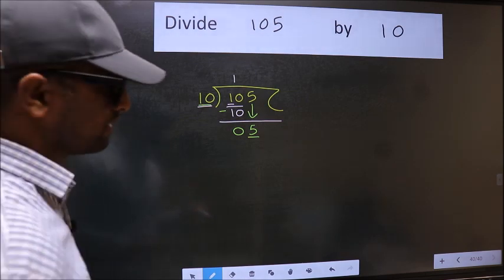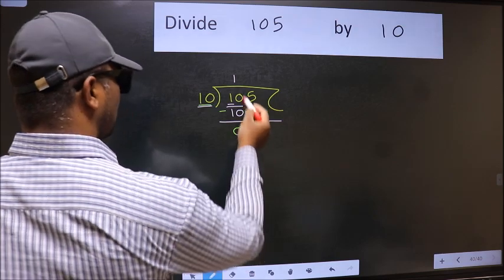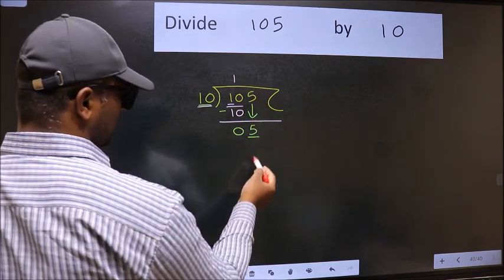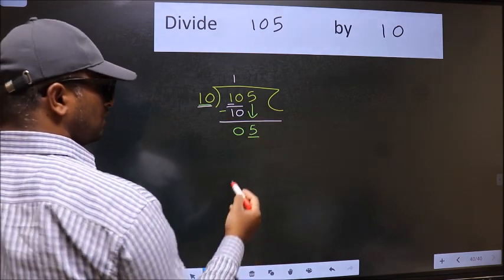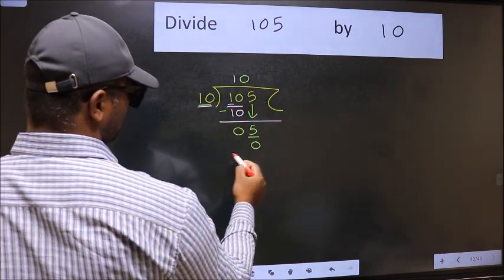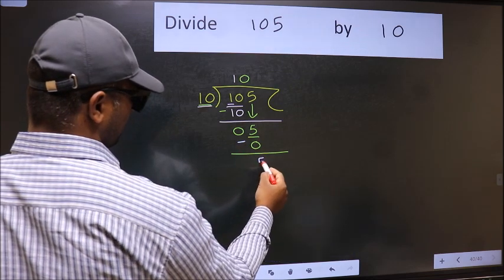Instead of that, what you should think of doing is, which number should we take here? If I take 1, we will get 10. But 10 is larger than 5. So what we should do is we should take 0. 10 into 0. Now we should subtract. We get 5.